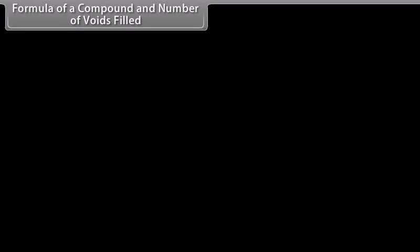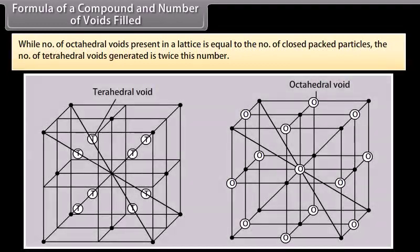Regarding the formula of a compound and number of voids filled: the number of octahedral voids present in a lattice is equal to the number of close-packed particles, while the number of tetrahedral voids generated is twice this number.